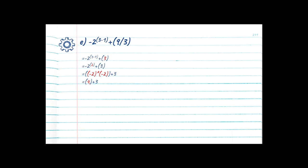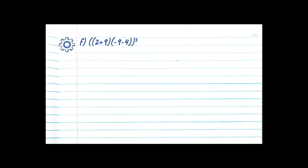We drop the rest of the equation. There's no division or multiplication left, so we move to step 4: addition and subtraction. We have an addition — 4 plus 3 is 7, giving us a final answer of 7.